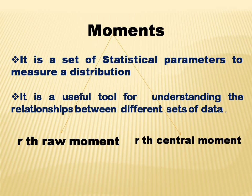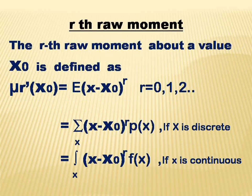Now we are going to discuss moments about a value x₀. This is defined as mu r dash of x₀ equal to the expectation of (x minus x₀) raised to r, where r equals 0, 1, 2, 3, etc. That is, the r-th raw moment is the expectation of (x minus x₀) raised to r.